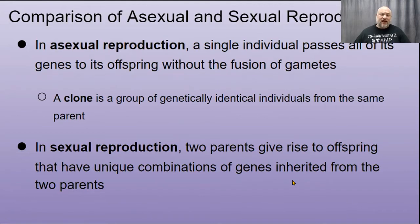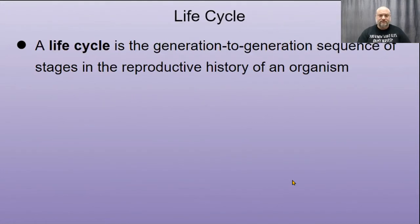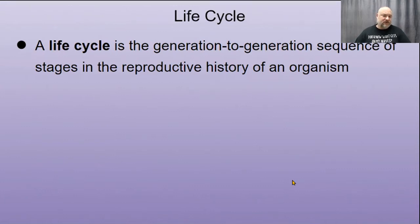In sexual reproduction, two parents give rise to offspring with unique characteristics that are a combination of genes inherited from both parents. A life cycle is the generation sequence of stages in the reproductive history of an organism.